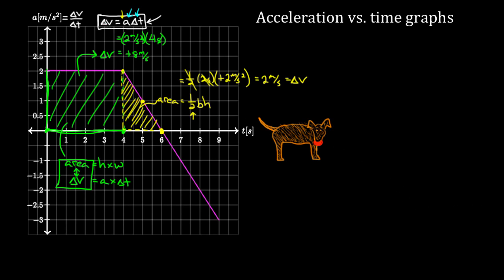Long story short: area on an acceleration versus time graph represents the change in velocity. This is one you have to remember. It's the most important aspect of an acceleration graph — the most useful aspect and the way you will analyze it. We care about the change in velocity because it allows us to find the velocity. We just need to know the velocity at one point, and then we can find the velocity at any other point.